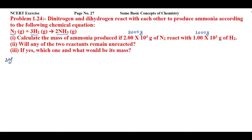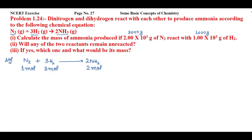To solve this, first we look at the reaction: N₂ + 3H₂ → 2NH₃. Here, 1 mole of nitrogen reacts with 3 moles of hydrogen to form 2 moles of ammonia. But since we're given masses of nitrogen and hydrogen, our first step is to convert these masses into moles using the formula: number of moles = actual mass divided by molar mass.